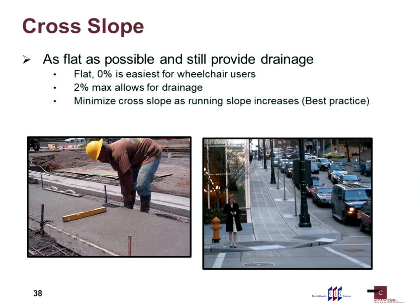Cross slope is important — flatter is better if you use a wheelchair, but we need some cross slope for drainage. Something you probably won't see in a standard, but part of the art of pouring concrete, is that as your running slope increases, your cross slope can be minimized. How much cross slope do you need to have water run down a steep hill? You don't really need any. The same applies to curb ramps — it's a matter of training your contractors and designers to minimize slope wherever they can.